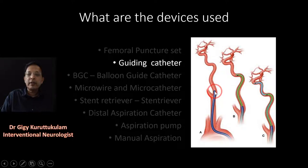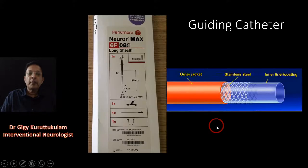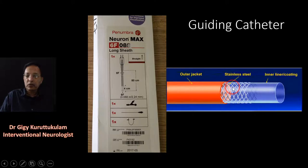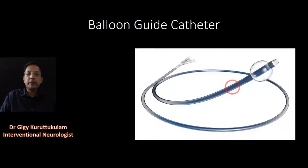The guiding catheter sits in the internal carotid artery, through which other catheters can be taken distally — distal access catheters and many other catheters. This is an example of a guiding catheter: the Neuron Max, one of the commonly used catheters. It is a 6 French catheter that comes in different lengths — 80 centimeter and 90 centimeter — and has a very supple distal part.